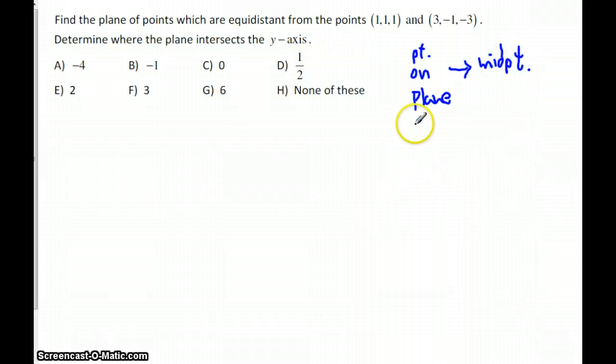That's just a midpoint formula where you take an average, you add the x's up, divide by 2, add the y's up, divide by 2, and add the z's up and divide by 2.